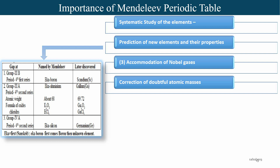When this element was later discovered, it was named scandium. Similarly, a gap was left at Group IIIA and Period 4, named eka-aluminium. Mendeleev predicted the properties of this eka-aluminium, and when the element was later discovered, it was named gallium — and the properties were in good agreement with those proposed by Mendeleev.